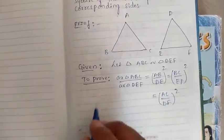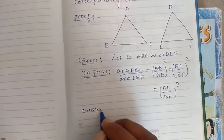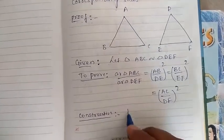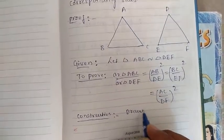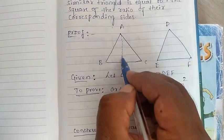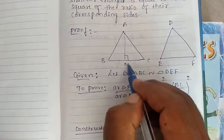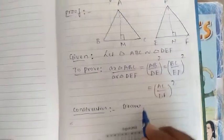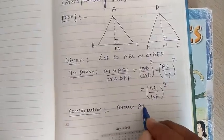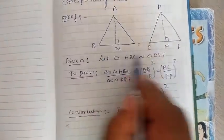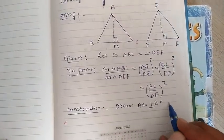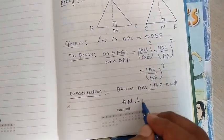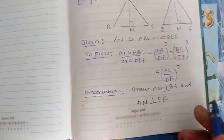Now do the construction. See what is the construction — draw two perpendicular lines. Draw AM perpendicular to BC, and DN perpendicular to EF.